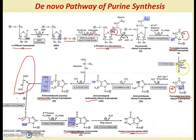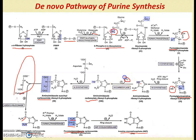Formylglycinamide is converted to aminoimidazole ribosyl-5-phosphate by ring closure between positions 8 and 9, forming the imidazole ring with an amino group attached. In Step 5, aminoimidazole ribosyl-5-phosphate is converted to aminoimidazole carboxylate — a carboxyl group is added at the fifth carbon position, donated by carbon dioxide.